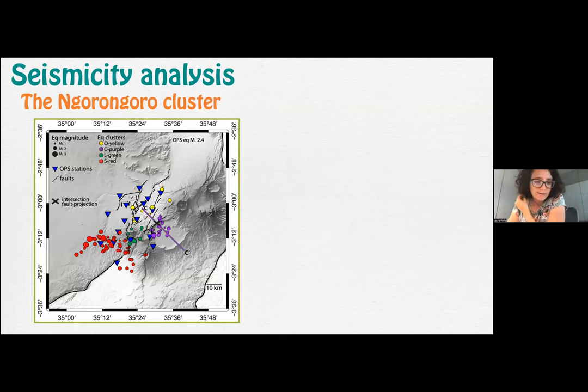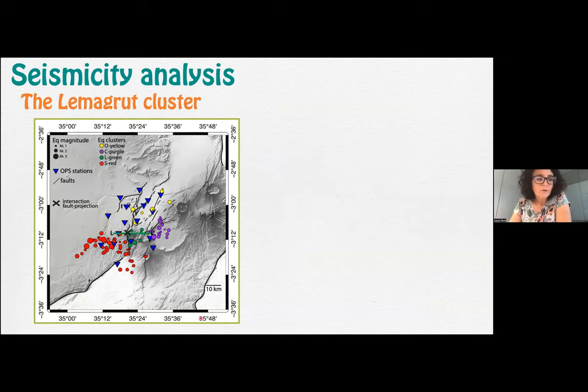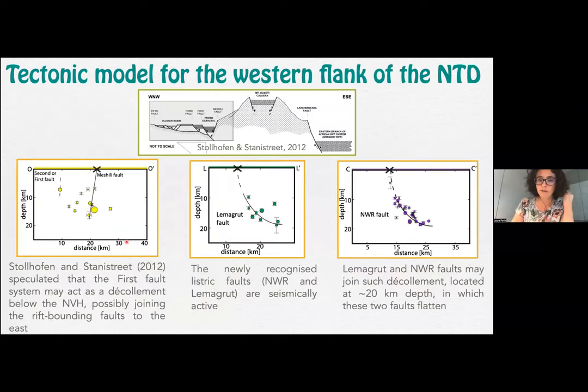Going to the purple cluster called the Ngorongoro cluster, when we project these on a section, the distribution of these earthquakes is between 5 to 20 kilometers. These earthquakes trace a listric fault whose surface projection corresponds to the rim fault on the Ngorongoro. Since this fault was not actually recognized, we decided to call it NWR. Then we have a few earthquakes between the Lerma Groot and the Ngorongoro, which trace a listric fault whose projection at the surface corresponds to the Lerma Groot fault. It flattened at 20 kilometers depth.